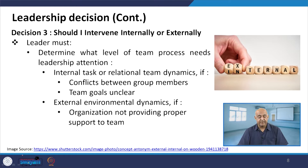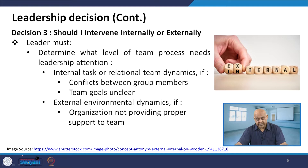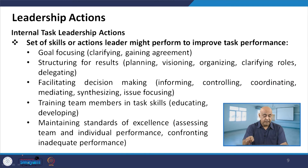In decision three — should I intervene internally or externally? — the leader must determine what level of team process needs leadership attention: internal task or relational team dynamics. If there are conflicts between group members and team goals are unclear, that is an internal issue. If the organization is not providing proper support to the team, that is an external environmental dynamic, and you have to find the intervention that will work.